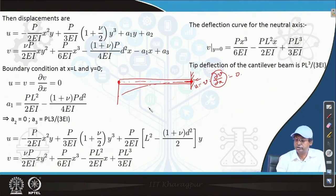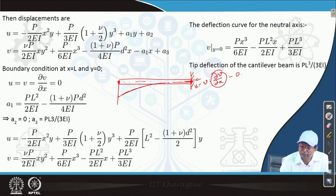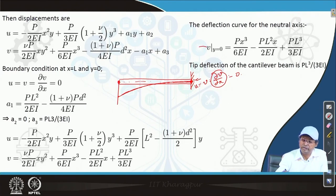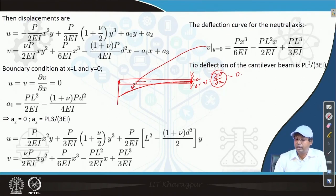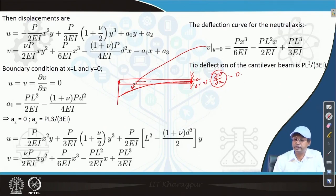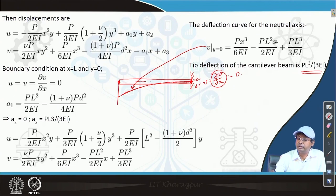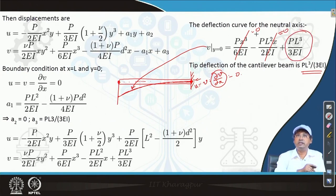Setting y = 0 gives the equation of the deflection line — the neutral axis deflection curve. As a verification: the tip deflection at x = 0 is PL³/(3EI), which is the well-known result obtainable by various methods. Putting x = 0 into the deflection expression confirms it equals PL³/(3EI), giving the desired solution.